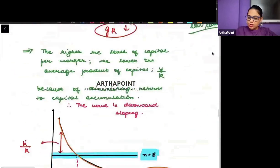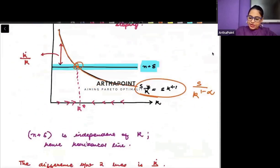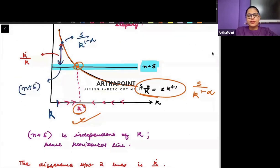So steady state is here where these two intersect. That is my steady state. But if my economy is currently here, suppose with this level of capital, then the gap between this and this...